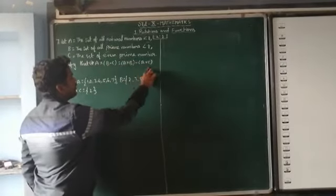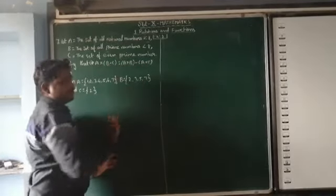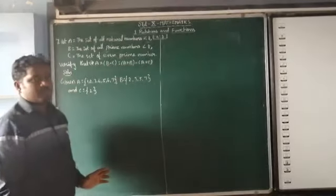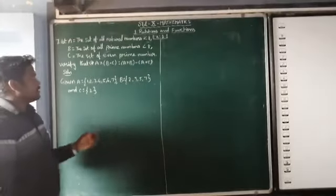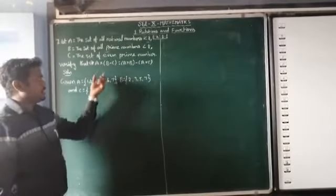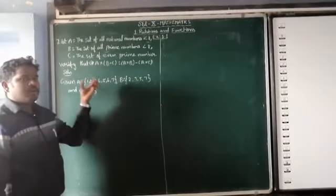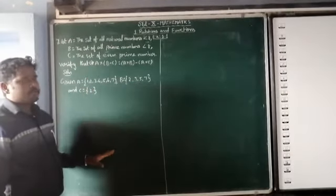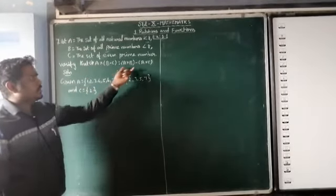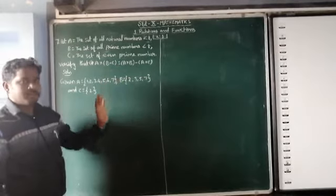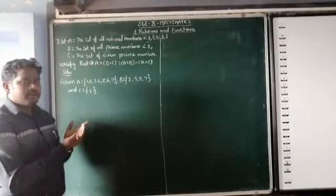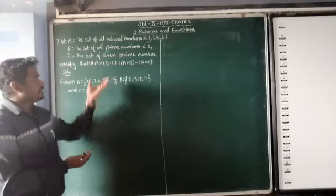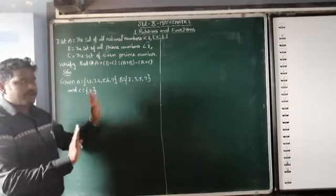In this problem, you have to verify. First of all, you want to take the left-hand side value. You want to find the sum of the value given. Next, you want to take the right-hand side value and find the sum of that value. Both values being equal means hence it is verified.